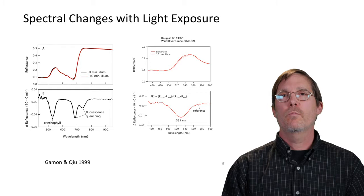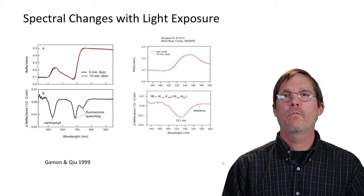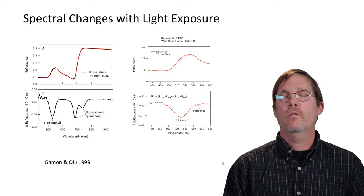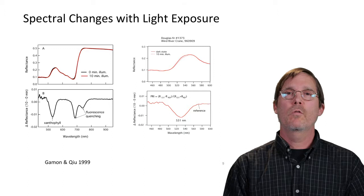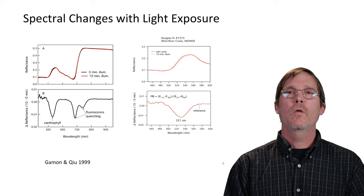When you take a difference spectrum, you see a clear dip centered at 531 nanometers. The edge of that feature is at approximately 570 nanometers, which makes a good reference. From this we developed the idea of an index — the photochemical reflectance index — that expresses that 531 nanometer xanthophyll cycle feature relative to the edge of the feature as a reference.